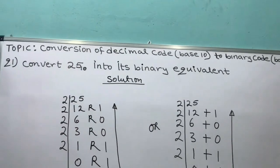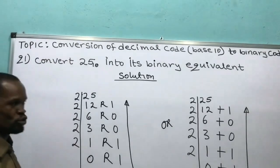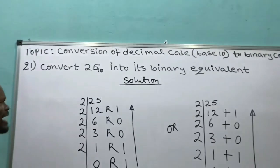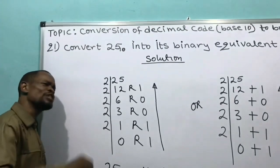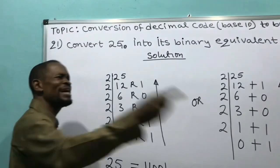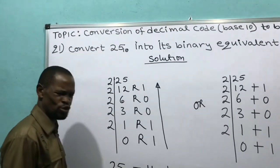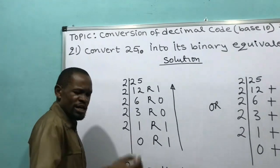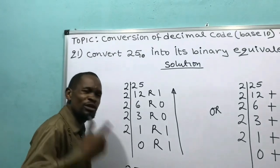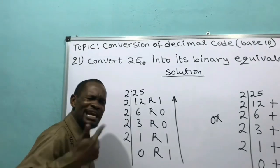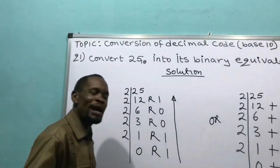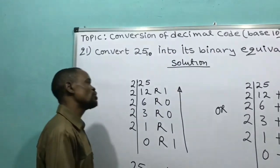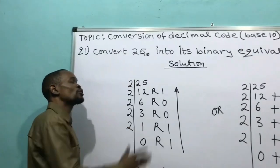That means you should convert it to binary code, which is the equivalent. What I will do is divide by the base I am sending it to. From base 10, I am sending it to base 2. Therefore, I am going to divide whatever they give me in base 10 by 2.